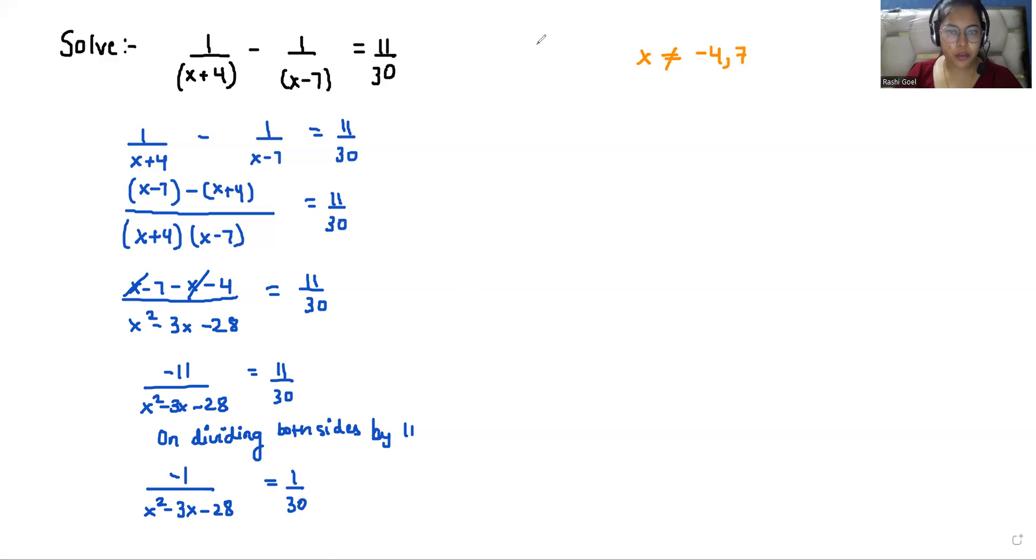And by doing cross multiplication, we can write it as x² - 3x - 28 equals -30. We can take -30 to the other side, so it becomes plus 30 equals 0.